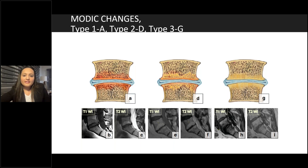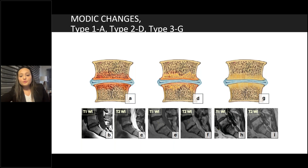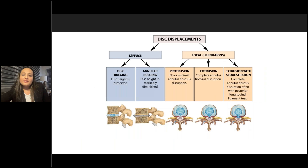The clinical significance of modic changes relates directly to the inclusion criteria for basivertebral nerve ablation. Any patient with anterior column pain or pain worse with flexion, along with MRI findings correlating to modic type 1 and type 2 changes, is a great candidate for basivertebral nerve ablation.